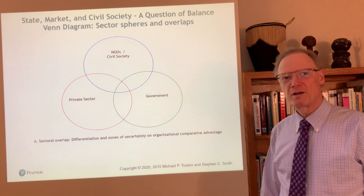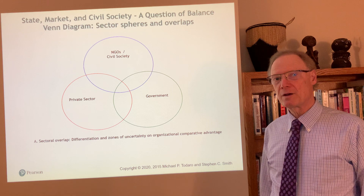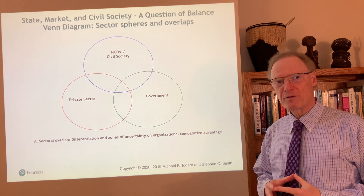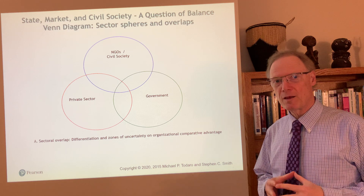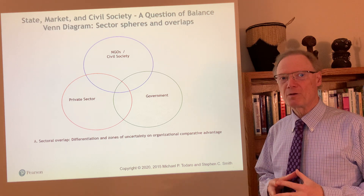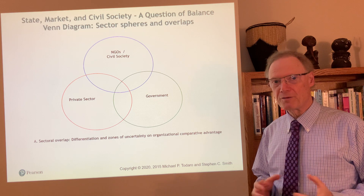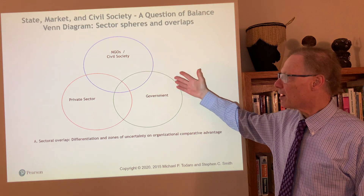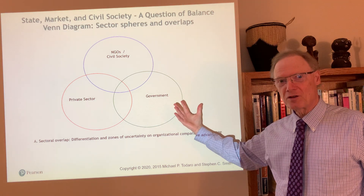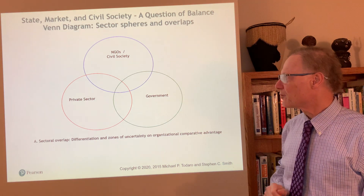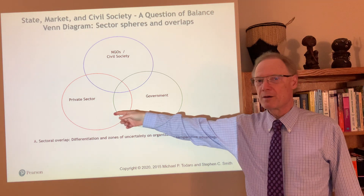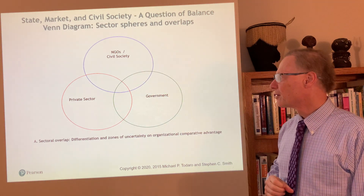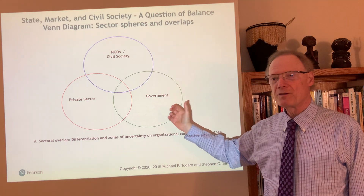Hello. In this episode we begin our study of chapter 11, broadly examining the role of state, market, and civil society in economic development. In the first couple of episodes we'll be looking in particular at potential roles of government but also their limitations. We can begin by thinking about this in a traditional Venn diagram framework. We have government or the state, the private sector, and civil society or NGOs, and we'll consider each of these in turn.